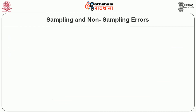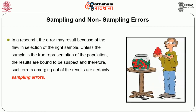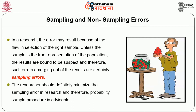We now proceed to sampling and non-sampling errors. In your research, error may result because of a flaw in the selection of the right samples. If the sample is not a true representation of the population, the results are bound to be suspect — such errors are called sampling errors. The researcher should definitely minimize the sampling error in research, and therefore a probability sample procedure is advisable.